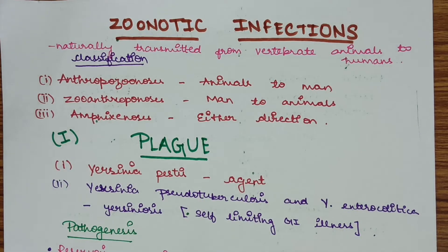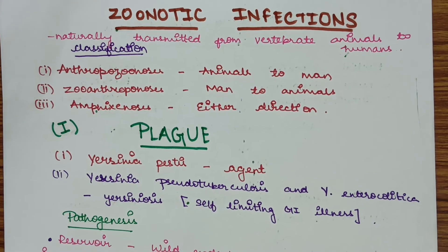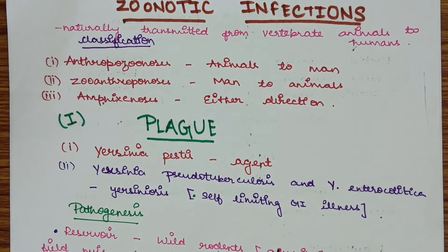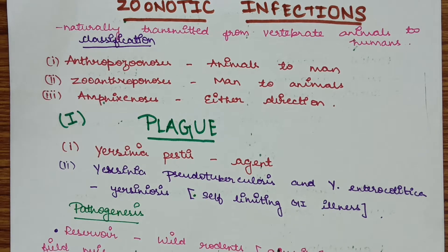Today we'll see about plague. Plague is one of the zoonotic infections. It is caused by Yersinia pestis. The other species of Yersinia include Yersinia pseudotuberculosis and Yersinia enterocolitica, and these two agents cause Yersiniosis, which is a self-limiting GI illness.